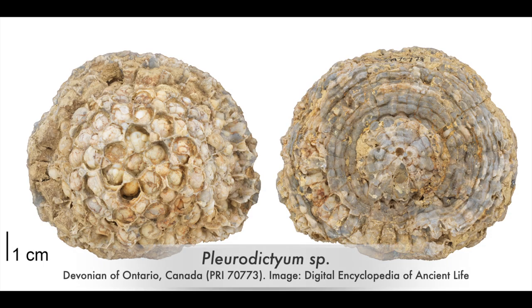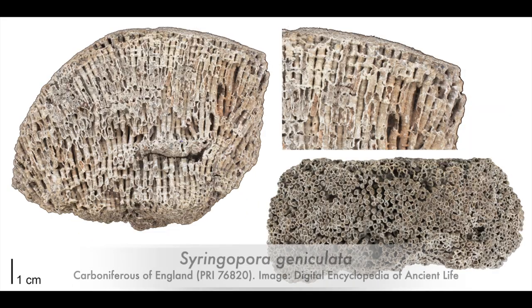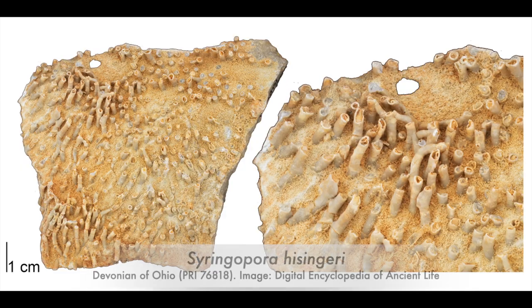There are many other types of tabulate corals as well. Some were mound shaped. Others look like a collection of tubes. Some well organized, others a bit of a mess.